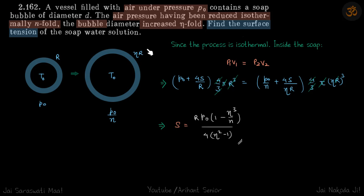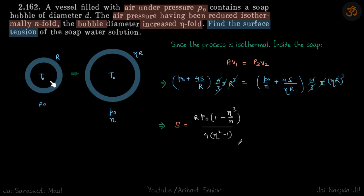We can assume the process to be isothermal and apply the gas law for the gas inside the bubble. We do this because we know the variation in pressure, and when we increase the radius we also know the variation in volume. So let's apply the gas law.